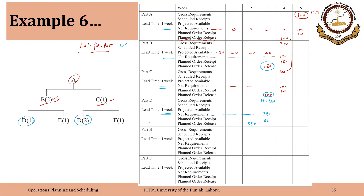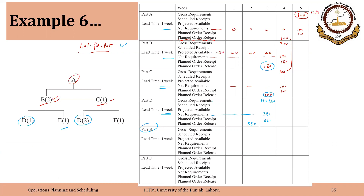Component E is a component of B, so its requirement comes from B. Since one E is required to make one B, the gross requirement is 180 in week 3. No inventory is available, so net requirements are 180 in week 3. With lot-for-lot policy, planned order receipt will be 180 as well as planned order release.